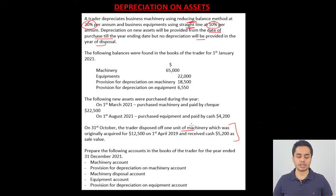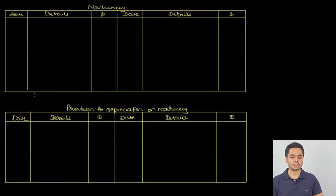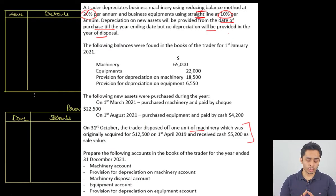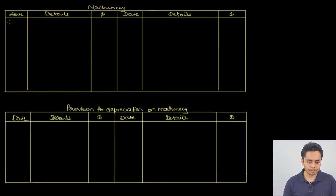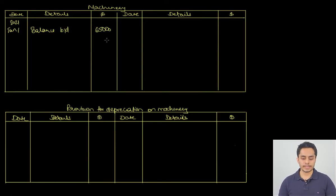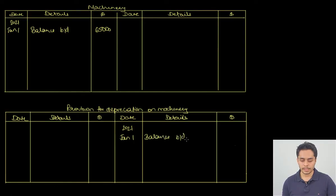Let us head directly to the ledger accounts. The question states that the following balances appeared on 1st January in the books of the trader: machinery is given at 65,000 and provision for depreciation on machinery is given at 18,500. These are opening balances. Machinery will have a debit balance of 65,000 and provision for depreciation will have a credit balance of 18,500. On the debit side of the machinery account, year 2021, Jan 1, opening balance brought down 65,000; and on the credit side of the provision account, Jan 1, balance brought down 18,500.